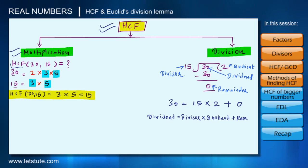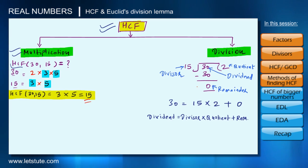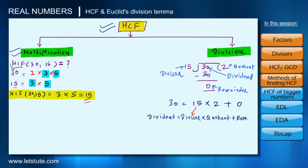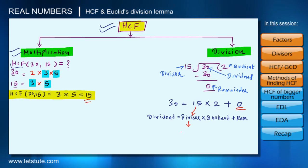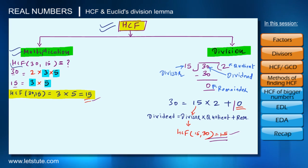From the multiplication method we know the HCF of 30 and 15 is 15. Here too, 15 is the divisor. So we conclude that in the division method, whenever we divide two positive integers and get a remainder equal to 0, we consider the divisor as the HCF. We got the same answer by both methods. But this was the case where remainder was 0 — what if the remainder is not 0?